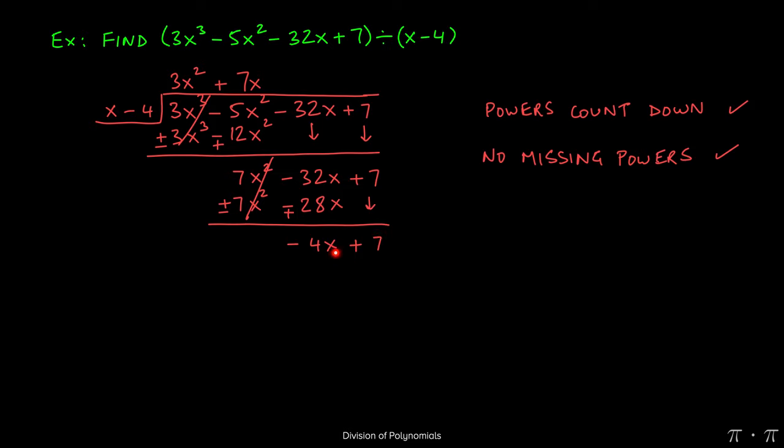Again, we notice that negative 4x is the leading term, x is still the leading term on the outside. So negative 4x divided by x will yield a negative 4. We place that at the very top.